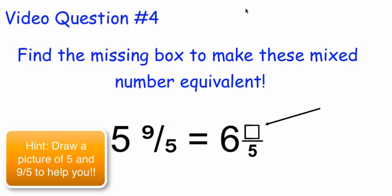All right, last question. Find the missing box to make these mixed numbers equivalent. So you have five and nine-fifths, and you're trying to find how that's equivalent to six and what over five? You're going from an improper fraction to a regular fraction.